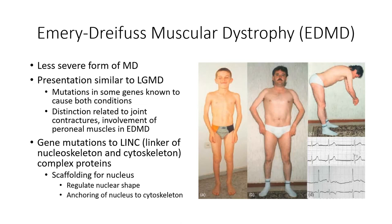What makes Emery-Dreyfus muscular dystrophy a distinct class is the involvement of distal limb musculature and the presence of joint contractures, which is not seen with limb-girdle muscular dystrophy. There is also a distinct cardiac component with Emery-Dreyfus muscular dystrophy that is typically not seen with limb-girdle muscular dystrophy, and this cardiac involvement plays a major role in morbidity and mortality in this patient group.